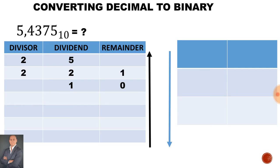The divisor of 2 cannot go into 1, therefore it's going to be 0, remainder 1. When we read the answer, we read from the bottom going up. Therefore the answer is 1, 0, 1, comma.